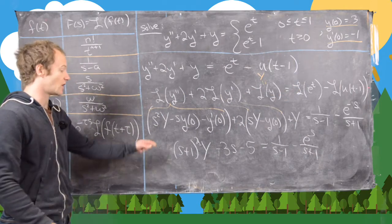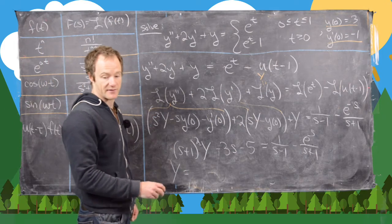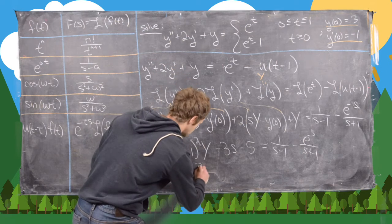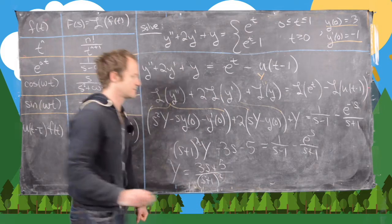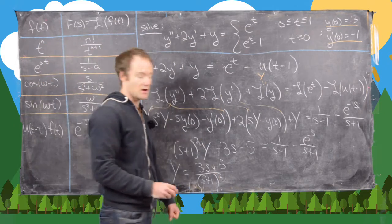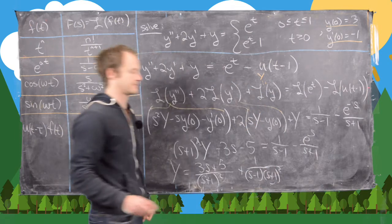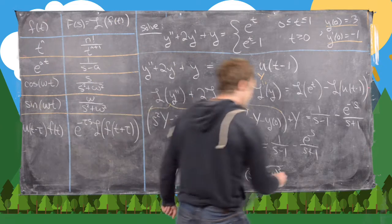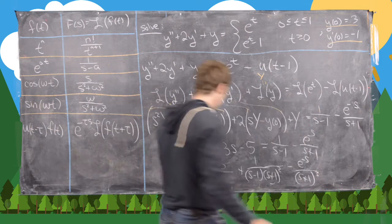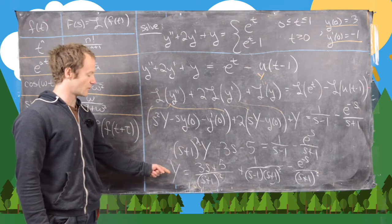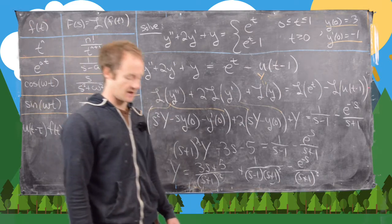Next we solve for capital Y, which gives us: (3s plus 5) over (s plus 1) squared, plus 1 over [(s minus 1)(s plus 1) squared], minus e to the minus s over (s plus 1) cubed. Then I'll erase the board, bring this equation to the top, and move toward the next step of solving this differential equation.